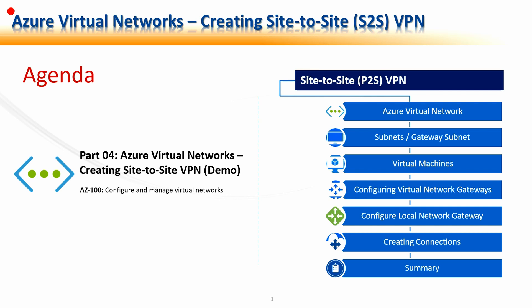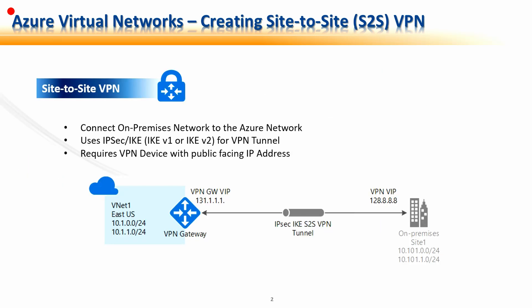Before we get into the demo, let's understand what exactly a Site-to-Site VPN is. A Site-to-Site VPN gateway, abbreviated as S2S, provides a way to connect your on-premises network to the Azure Virtual Network. This type of connection requires a VPN device located on-premises that has an externally facing IP address. This is how it differs from Point-to-Site, where a VPN device is not required and no public IP address is required — Point-to-Site depends on VPN client software downloaded from Azure, whereas S2S requires a VPN device with an externally facing IP address.